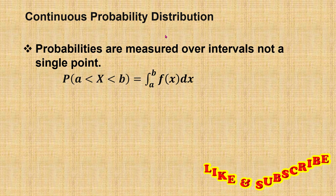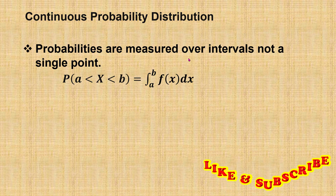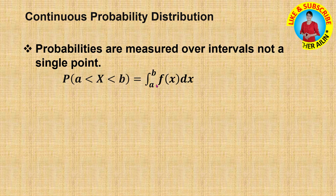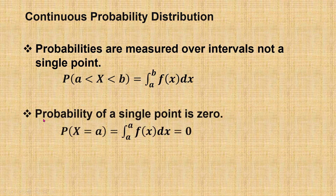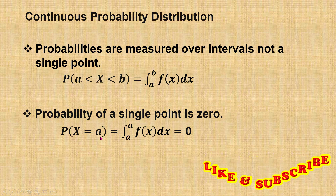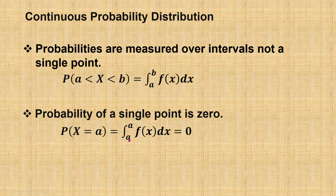For continuous probability distribution, probabilities are measured over intervals, not at a single point. To find the probability of x from a to b, we integrate f(x) from a to b to find the area under the curve. The probability of a single point equals 0, because the probability of x = a is actually the probability of x between a and a, and integrating f(x) from a to a gives 0.